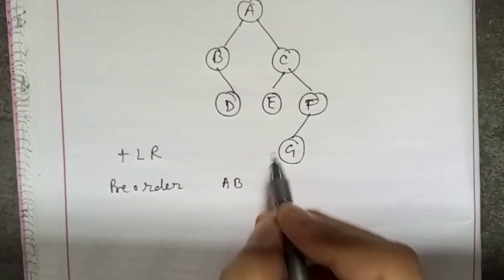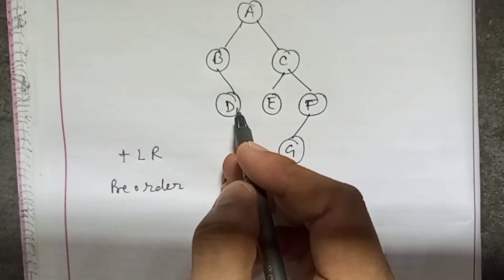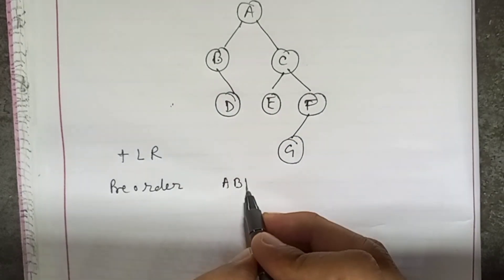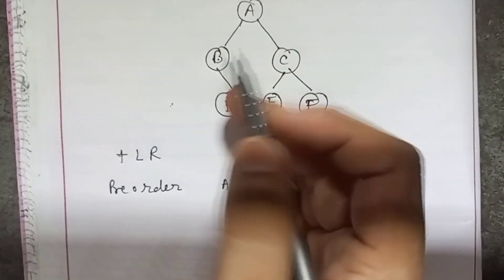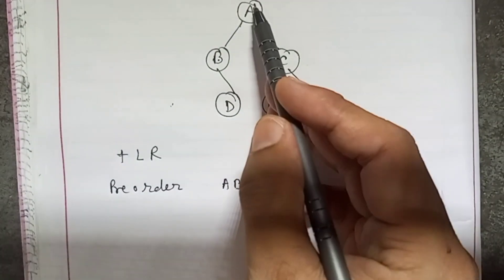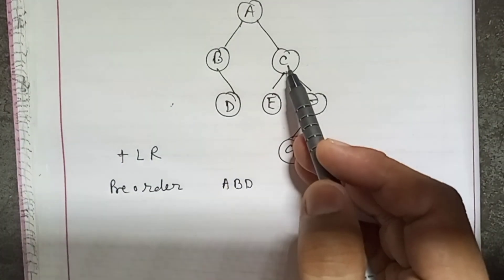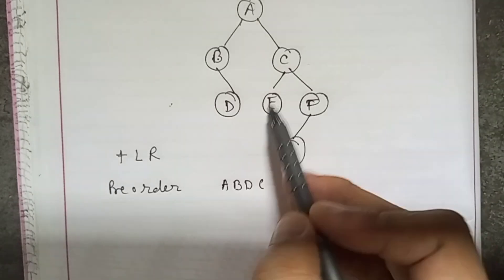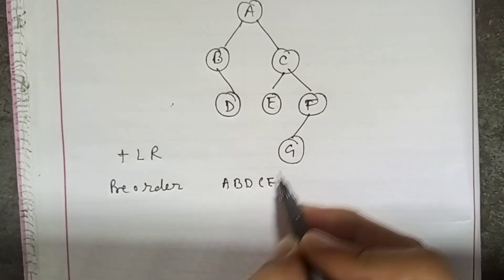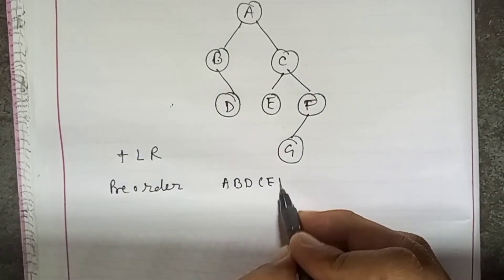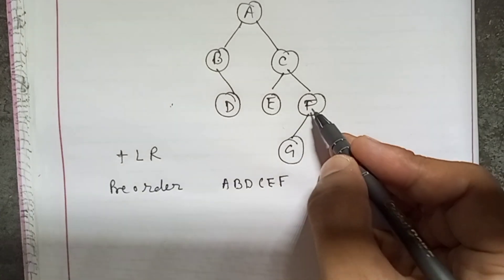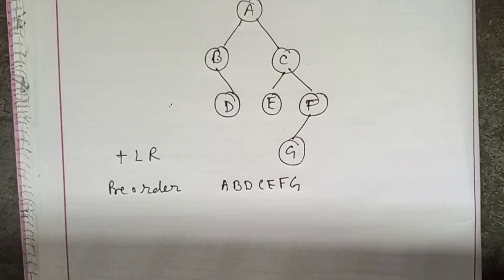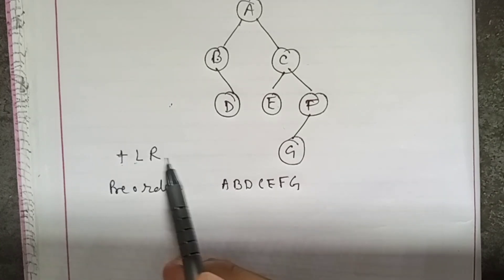Going left we visit B. When you go left you have to finish that subtree — root, left, nothing is there for right, so that portion is done. Then going to the right side, root begins again — root, left, right — so we get C, E, F. This completes the pre-order traversal: root, left, right.